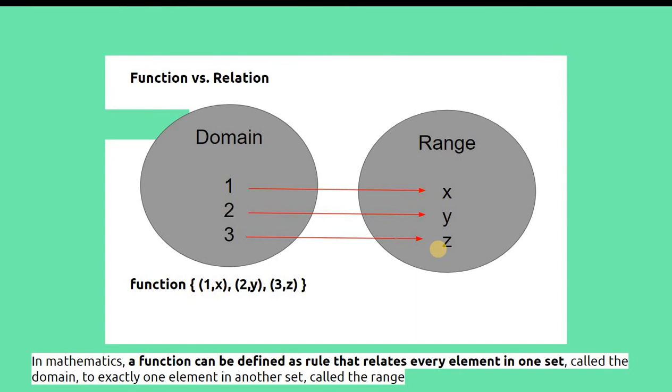In our definition below, in mathematics a function can be defined as a rule that relates every element in one set—every element, each element in the domain—can be related to the range. One set, meaning only one, called the domain, to exactly one element in another set called the range. So each element in the domain must have a relationship with a variable in the range, and it must be to exactly one element. Like this: one is to x, two is to y, three is to z—each one has a corresponding pair.